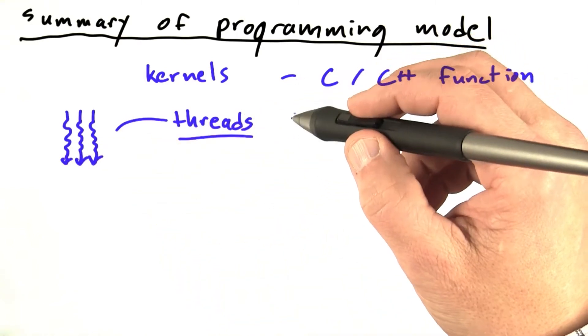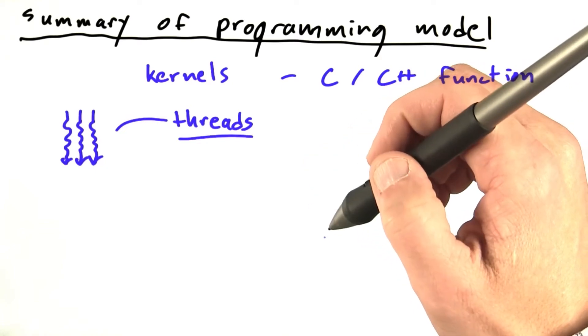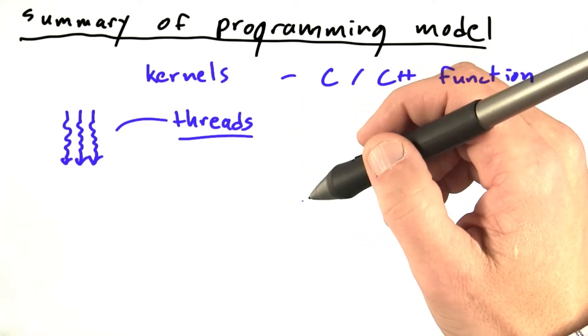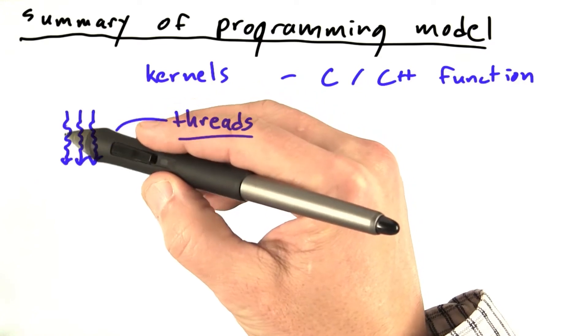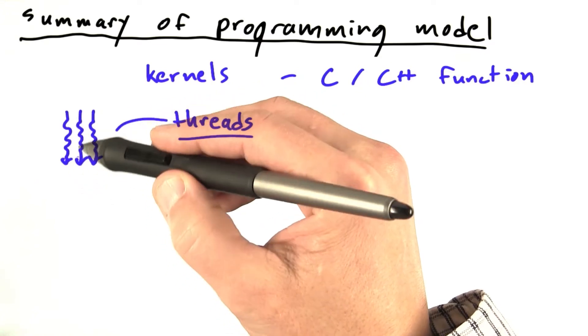There might be branches like if statements or switch statements. There might be loops, for loops, do loops. So you don't know in advance what path you're going to take. This is not straight line code.